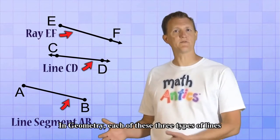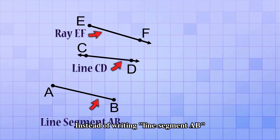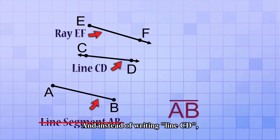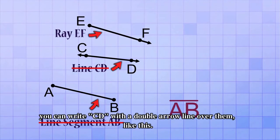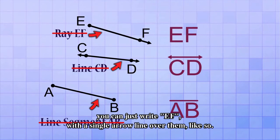In geometry, each of these three types of lines has a shorthand way of writing it. Instead of writing Line Segment AB, you can just write AB with a line over the top. And instead of writing Line CD, you can write CD with a double arrow line over them, like this. And finally, instead of writing Ray EF, you can just write EF with a single arrow line over them, like so.